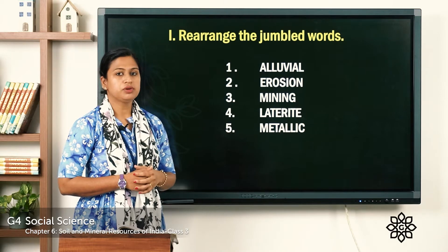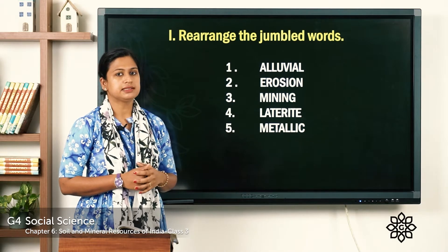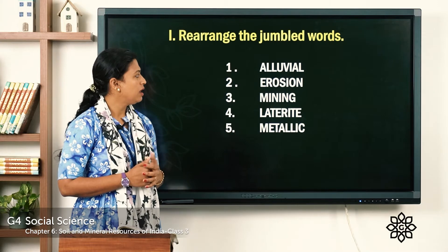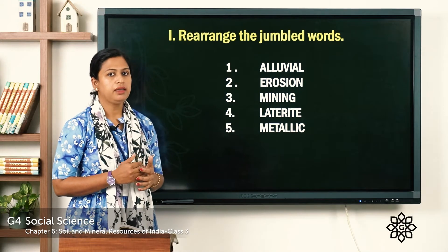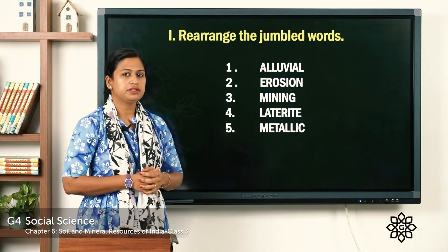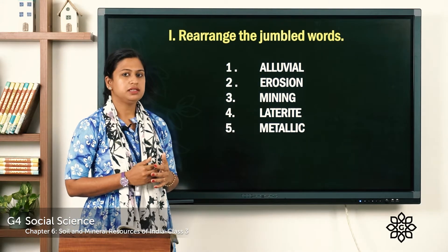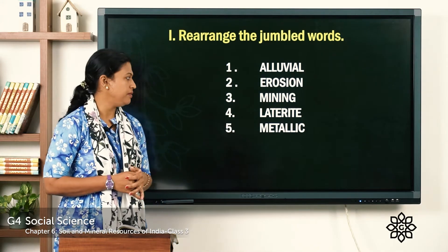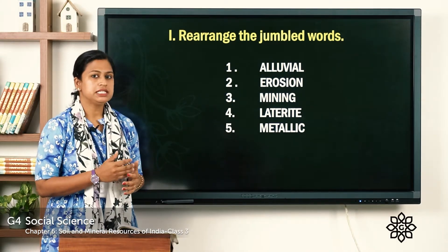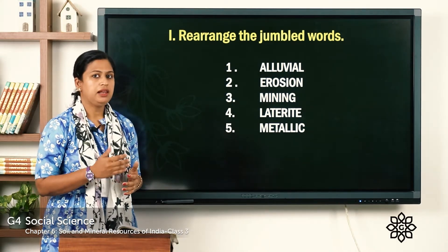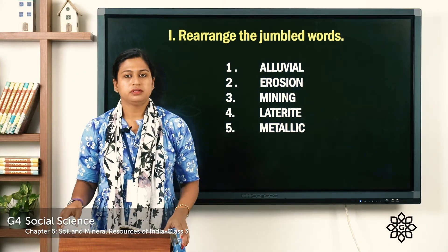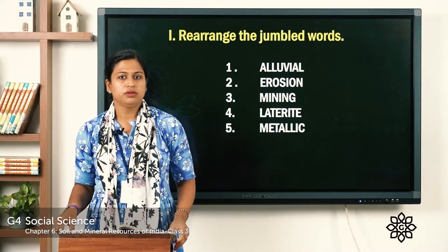The second word is erosion — E-R-O-S-I-O-N. The third one is mining — M-I-N-I-N-G. The fourth word is laterite — L-A-T-E-R-I-T-E. The fifth word is metallic — M-E-T-A-L-L-I-C. You have to write these in your notebook.